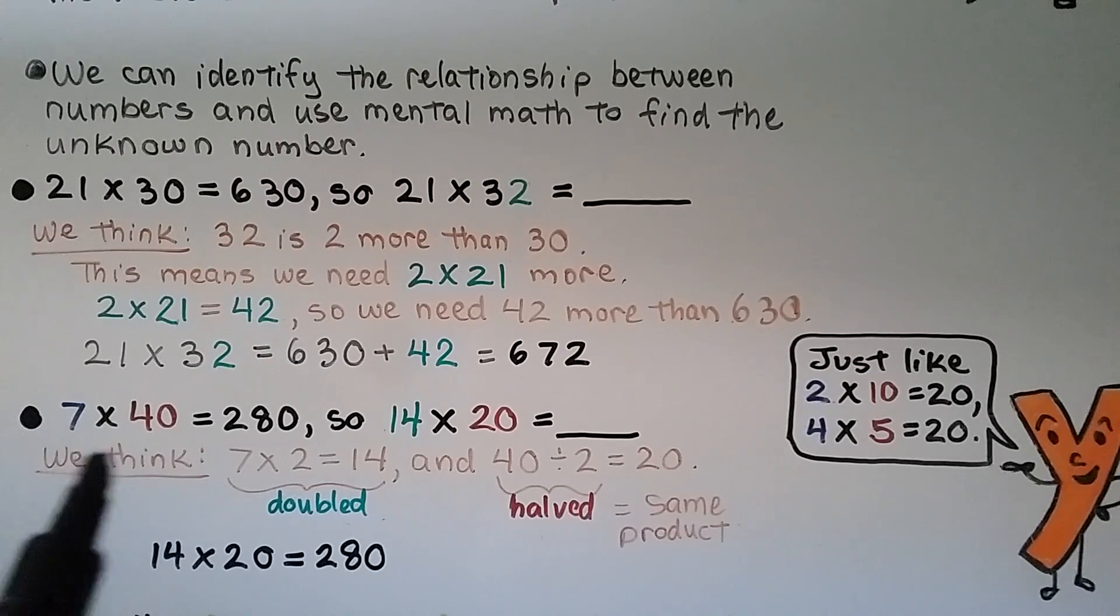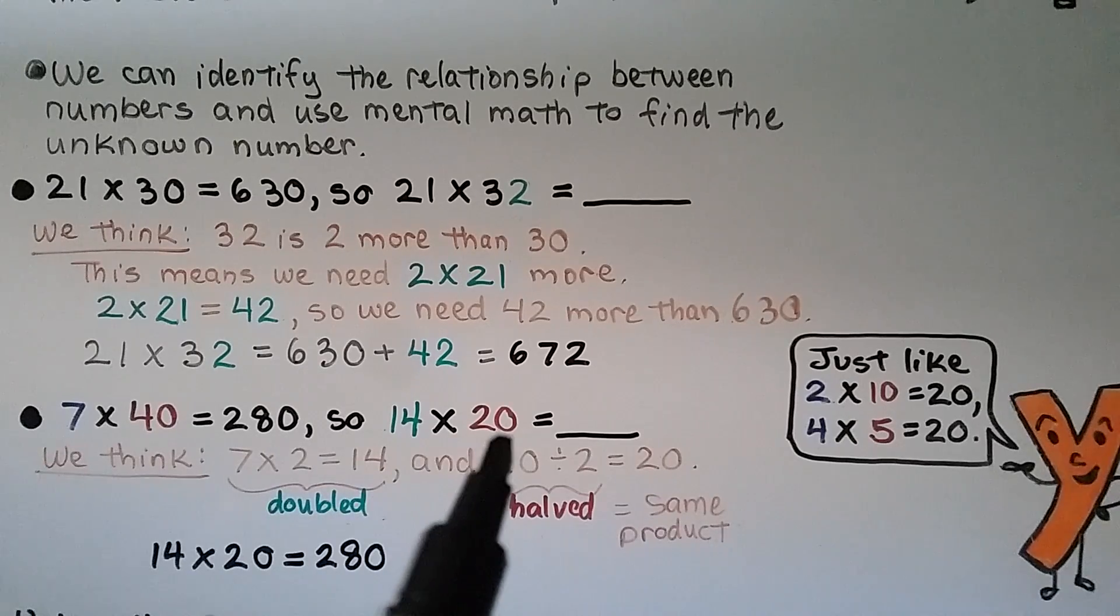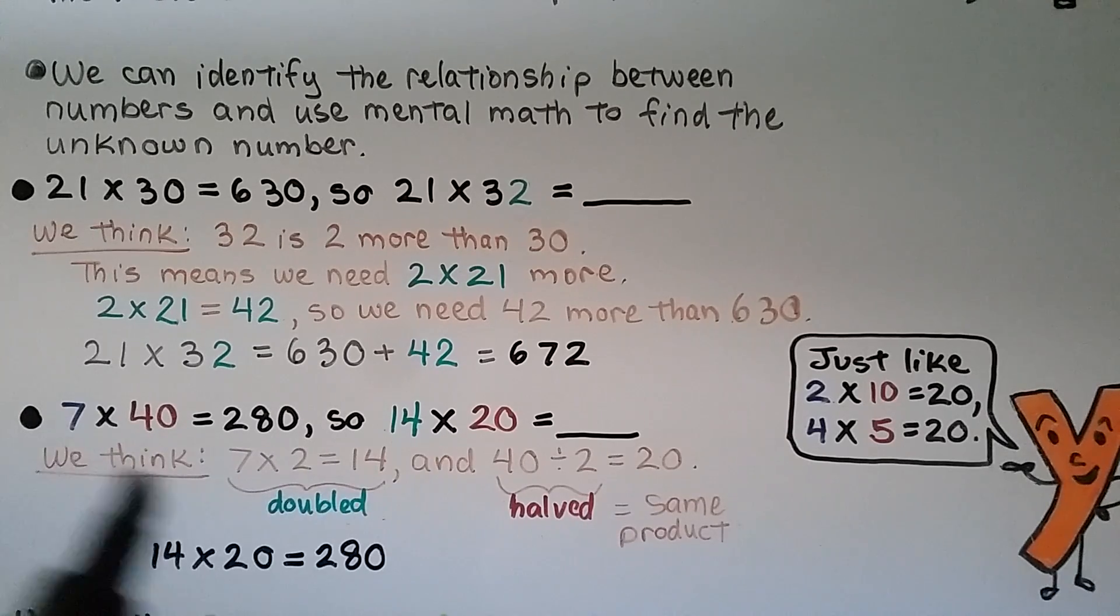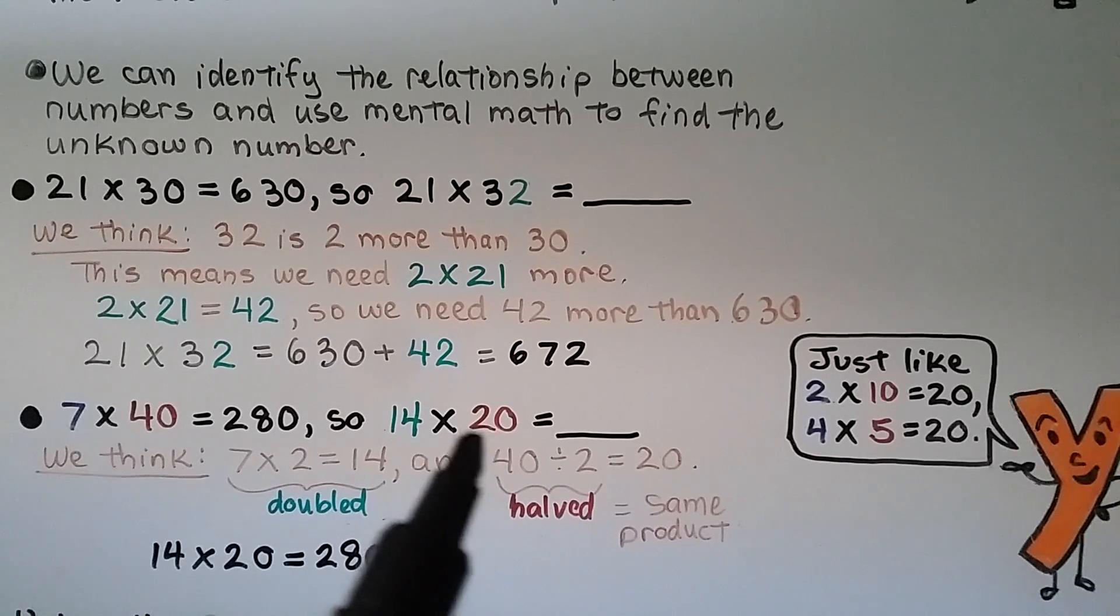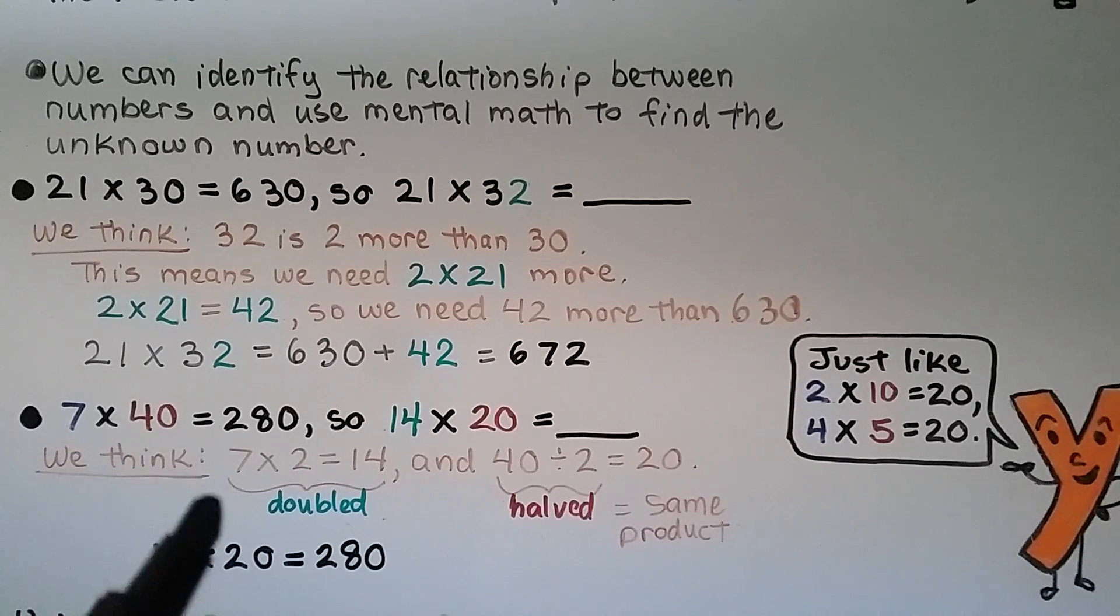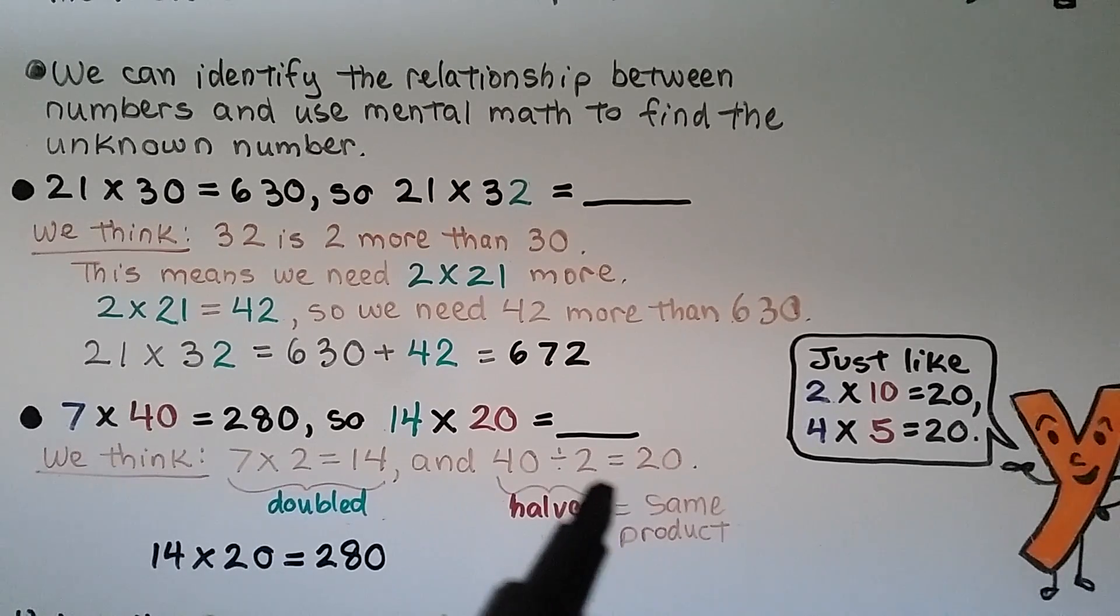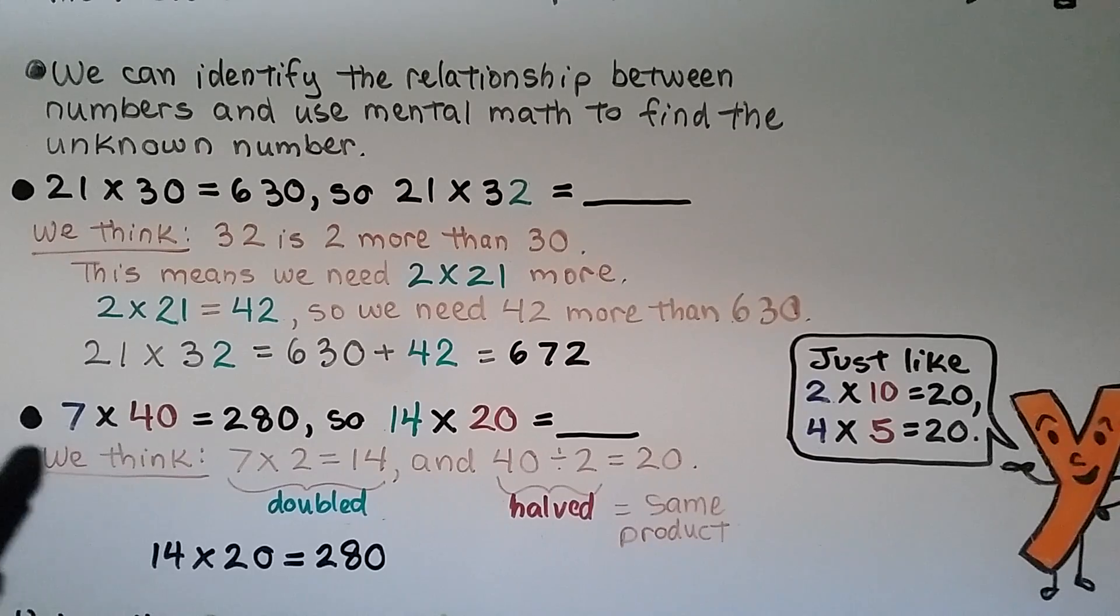Look at this one. We have 7 times 40 is equal to 280. So 14 times 20 is equal to what? So look at the relationship between the numbers. 7 and now it's 14, 40 and now it's 20. It's cut in half, wasn't it? So this is like halving and doubling. We're going to get the same product. So we think 7 times 2 is equal to 14. It got doubled. And 40 divided by 2 is equal to 20. It got halved. We're going to have the same product. So if 7 times 40 is equal to 280, then 14 times 20 is equal to 280.